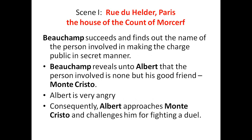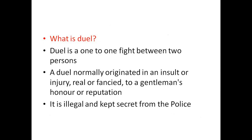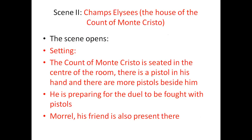Finally, Bouchamp succeeds and finds out the name of the person involved in making the charges public. Bouchamp reveals to Albert that the person involved is none other than his good friend Monte Cristo. After hearing the name, Albert is very angry and consequently approaches Monte Cristo, challenging him to a duel — a one-to-one fight, which is illegal and kept secret from the police, normally originating in an insult to a gentleman's honor.